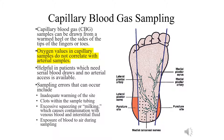Capillary blood gas sampling is the preferred route to draw gases for pediatrics. A capillary blood gas can be drawn from the heel, or the sides of the tips of the fingers or toes. The oxygen values in capillary gases are not accurate compared to arterial samples, so we do not rely on the capillary gas to adjust our oxygen.